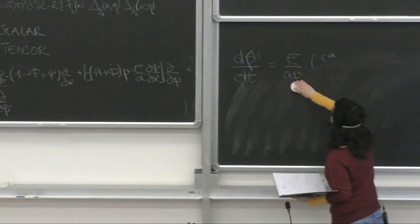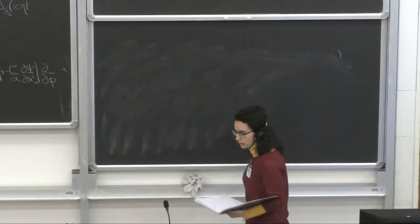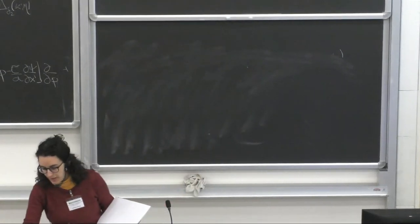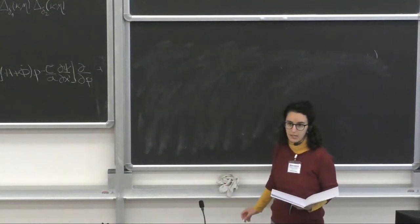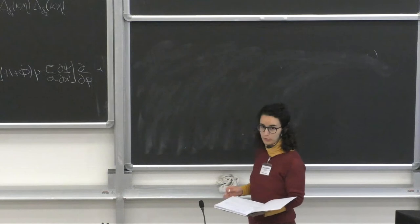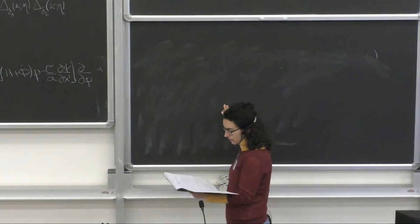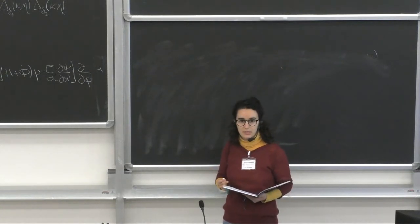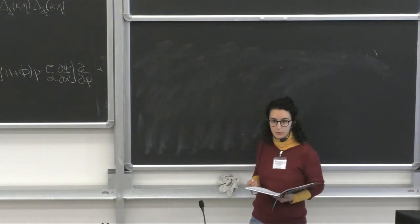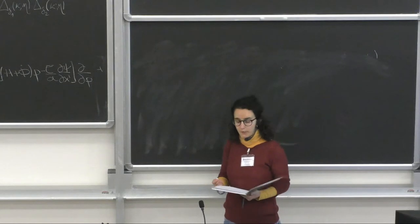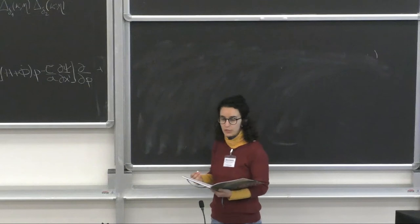The next step will be to give an expression of the perturbed version of the distribution function. Once we have that, we can write down the full set of Boltzmann and Einstein equations in linear order for a perturbed universe. Let's first start with the tensors. As we did for scalar perturbations yesterday, we first derive the expression of the four-momentum in case of tensor perturbations, and then derive each of the different terms of the Liouville operator from that expression.